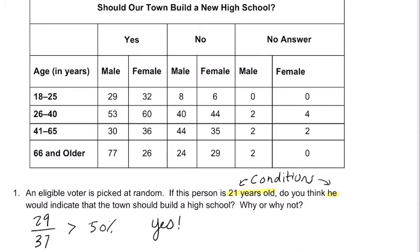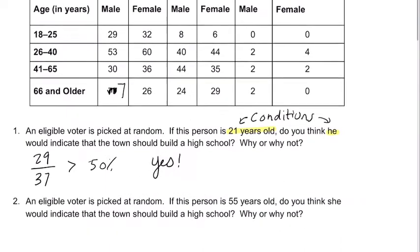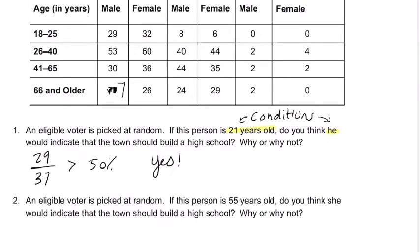I have a typo in this spot — it should say seven. In the next situation, they ask: if the person is 55 years old, that's our first condition, would she indicate the town should build a new high school?